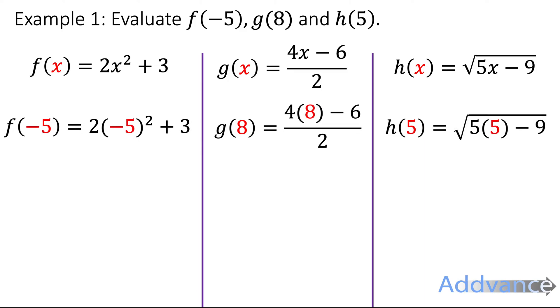And now we just use our bidmaths to evaluate them. So f of minus 5: minus 5 squared becomes 25, 2 times 25. 2 times 25 is 50, plus the 3 is 53.